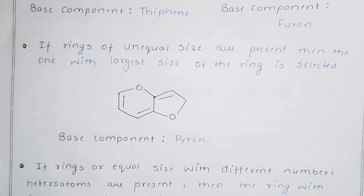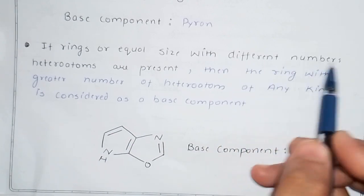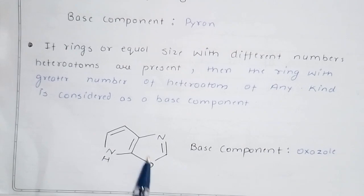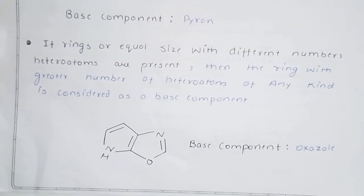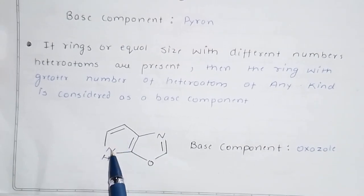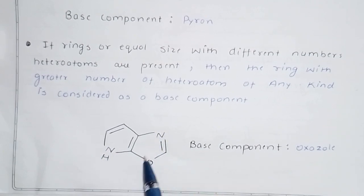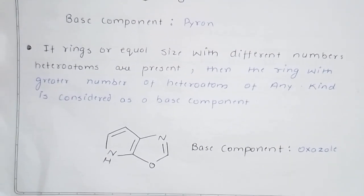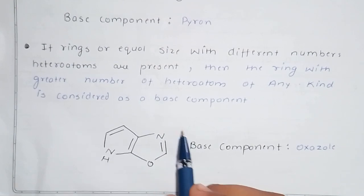The next rule: if the rings are of equal size but have a different number of heteroatoms — for example both are five-membered rings but one has two heteroatoms — then the ring with the greater number of heteroatoms is selected as the base compound. For example, oxazole would be selected as the base compound.